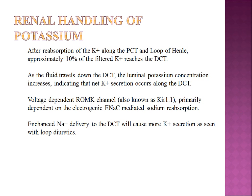Now let's look at renal handling of potassium. Most ions filtered at the glomerulus are absorbed by the PCT and the loop of Henle — the same holds true for potassium. Approximately 10% of filtered potassium reaches the distal convoluted tubule. As fluid travels down the DCT, luminal potassium concentration increases, indicating net K+ secretion along the DCT. So in the distal nephron, K+ secretion occurs, while earlier nephron segments actively absorb potassium.